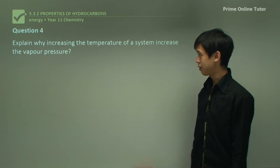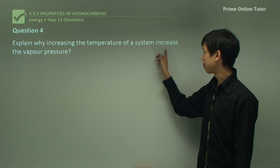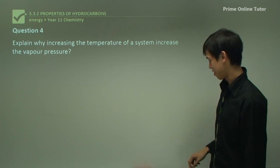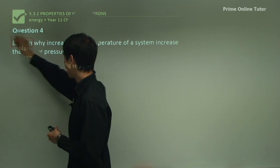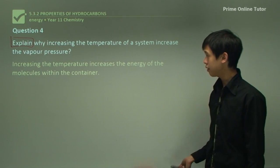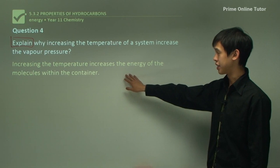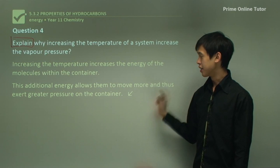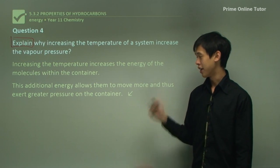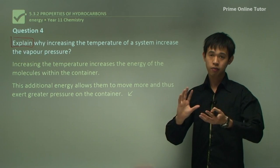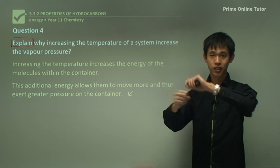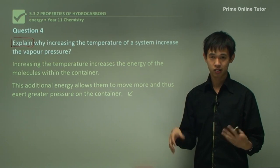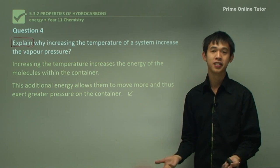Question four: explain why increasing the temperature of a system increases the vapor pressure. Increasing the temperature increases the energy of the molecules — temperature is a measure of the energy of each molecule. The additional energy allows them to move more and thus exert greater pressure on the container. More particles can move into the gas phase and hit the container wall. Simply: more molecules equals more collisions, and more collisions equals bigger pressure.